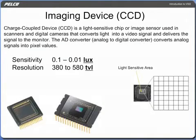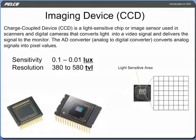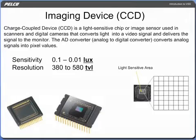A charge-coupled device, CCD, is a light-sensitive chip or image sensor used in scanners and digital cameras that converts light into a video signal and delivers the signal to the monitor. The AD converter, analog-to-digital converter, converts analog signals into pixel values. A CCD camera is similar to a film camera, except that an electronic sensor replaces the film.